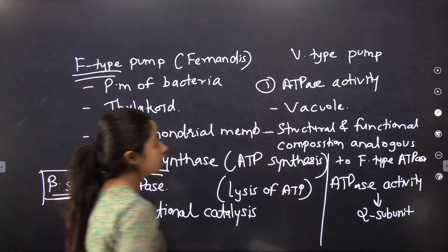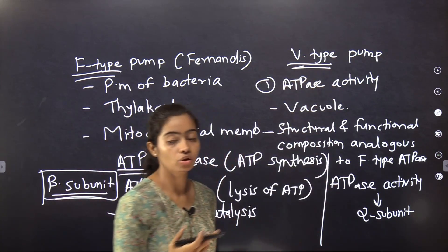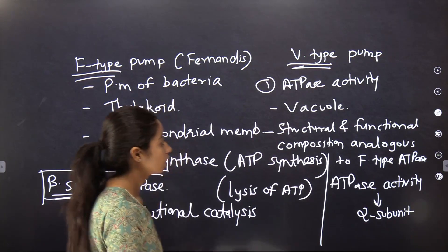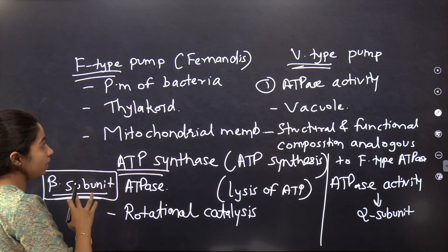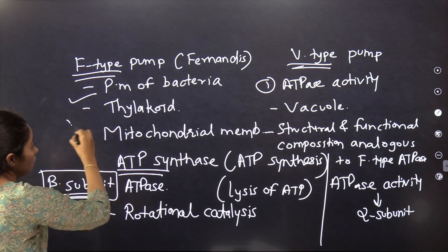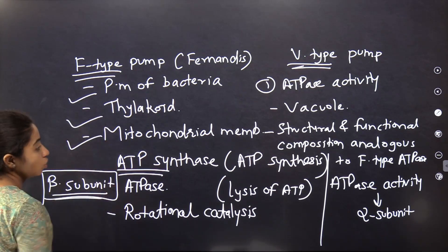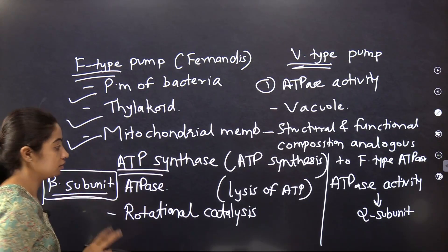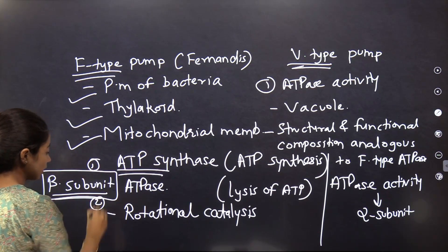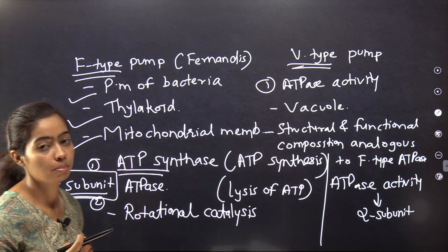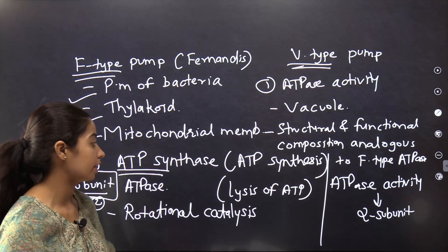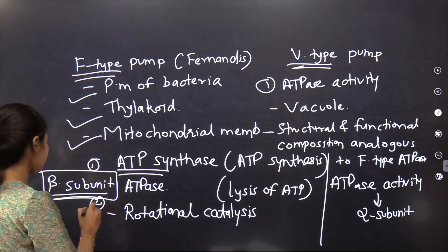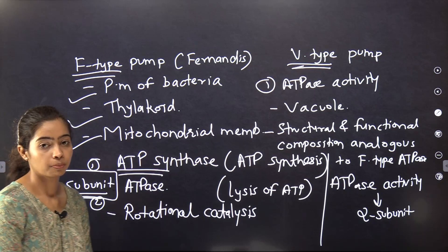To summarize: F stands for Fernandes — F-type ATPase is present in the plasma membrane of bacteria, thylakoid, and inner mitochondrial membrane, and has both ATP synthase and ATPase activity with rotational catalysis mechanism, with ATPase activity in the beta subunit. V stands for vacuole — V-type ATPase is also found in peroxisomes, lysosomes, and endosomes.